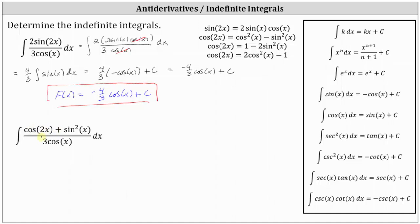In this case, because the numerator also contains plus sine squared x, notice how if we substitute cosine squared x minus sine squared x for cosine two x, the sine squareds will simplify out. So let's substitute cosine squared x minus sine squared x for cosine two x. Performing the substitution, we have cosine squared x minus sine squared x for cosine two x, and then plus sine squared x, all divided by three cosine x.